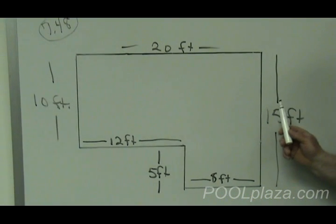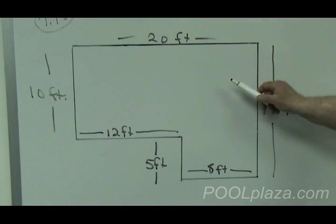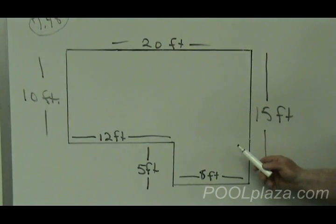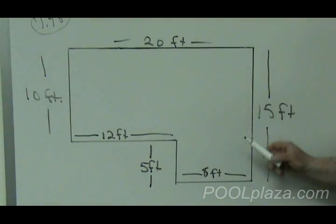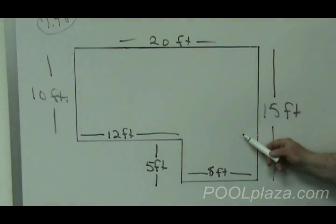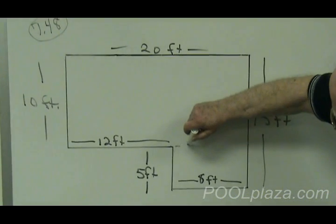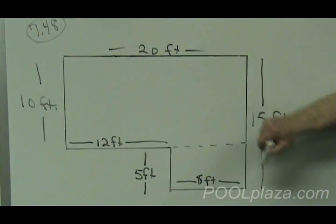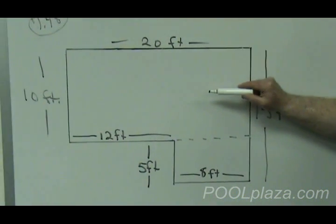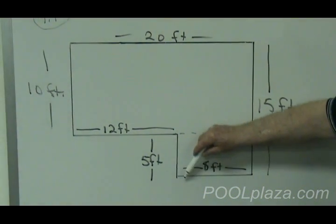Not all pools are rectangles or squares. This particular pool is an L shape. In order to get the best computation of volume, you should divide the shape of the pool into two parts, each of which will be a rectangle. I have chosen to divide it here at the bottom. The upper rectangle is 20 by 10 feet. The bottom rectangle is 5 feet by 8 feet.